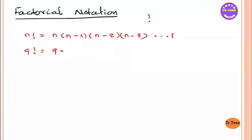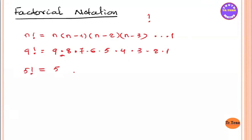N... nine, eight, seven, six, five, four, three, two, one. Two, one. Two, one. This is the first factorial.